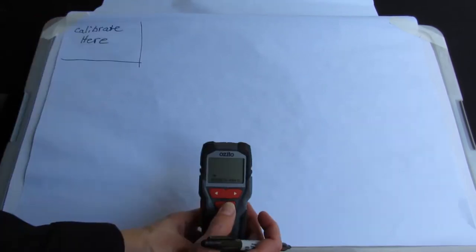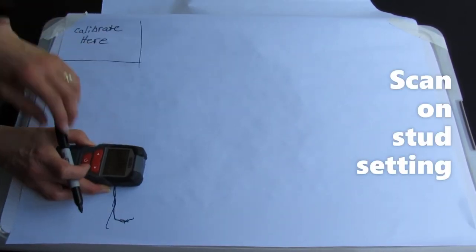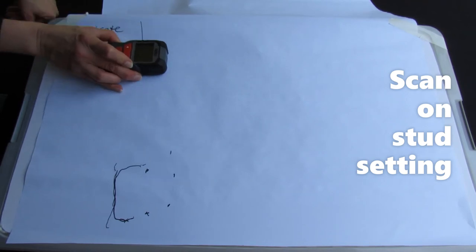Use the stud setting to model a gravity survey. Scan the box, marking areas where the signal is strongest.